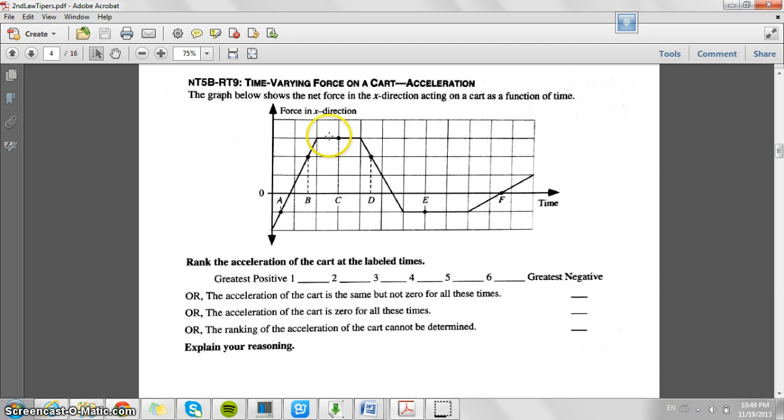So, that being said, we just look at the most positive value, which is c, and then b and d, they have the same distance away from zero, so they're going to be equal in acceleration. And then, we have f, and finally e and a, which are also going to be equal, but they're going to have the greatest negative acceleration, contrasted with c, with the greatest positive.